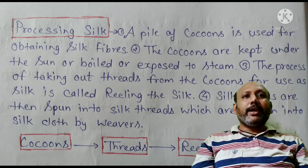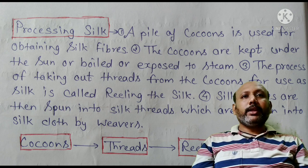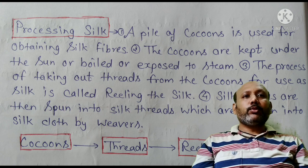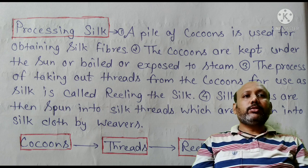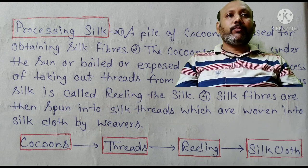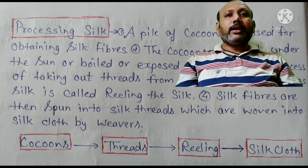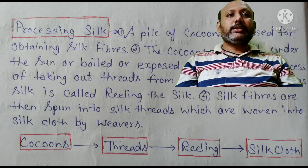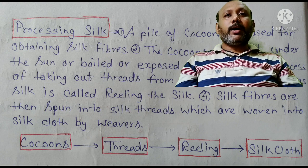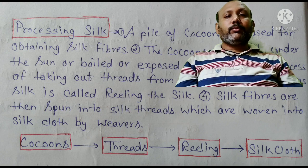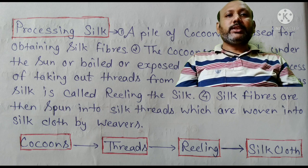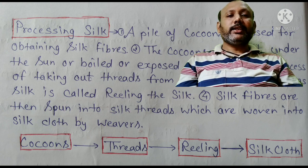Processing silk: A pile of cocoons is used for obtaining silk fibers. The cocoons are kept under the sun, boiled, or exposed to steam. The process of taking out thread from the cocoons for use as silk is called reeling of silk. Silk fibers are then spun into silk threads, which are woven into silk cloth by weavers. The processing of silk: cocoons → threads → reeling → silk cloth.